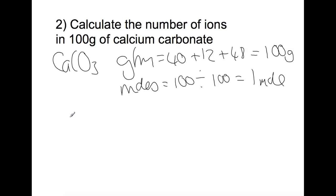So we have one mole of this formula unit. However, this is in two ions, so we have Ca2+ and CO3 2−, so we have two ions there, so we have two times 6.02 times 10 to the 23 ions present.